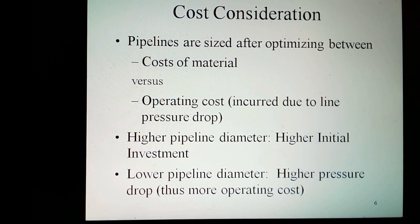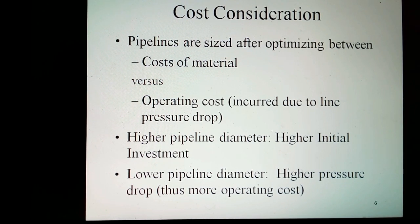Cost consideration: pipelines are sized after optimizing between costs of material versus operating costs incurred due to line pressure drop. For higher pipeline diameter, there is higher initial investment. For lower pipeline diameter, there is higher pressure drop and thus more operating cost.